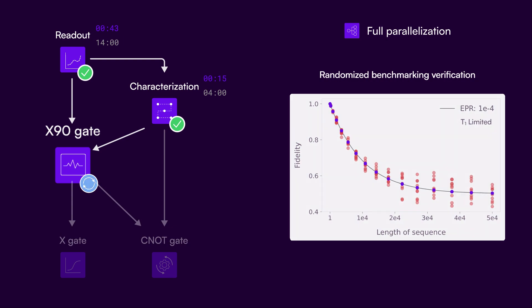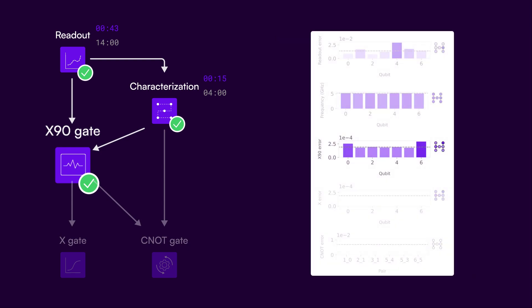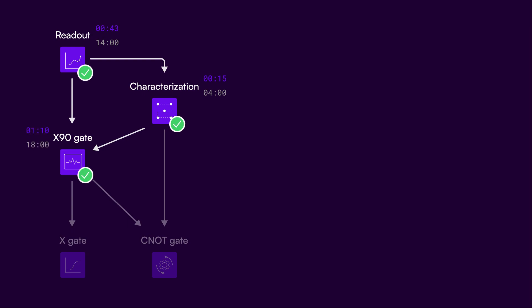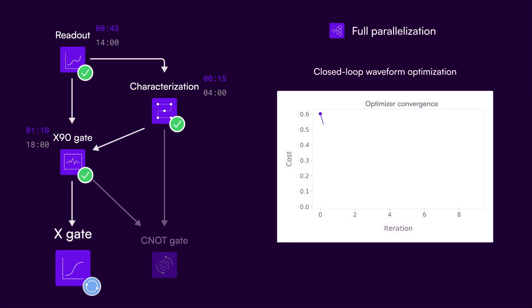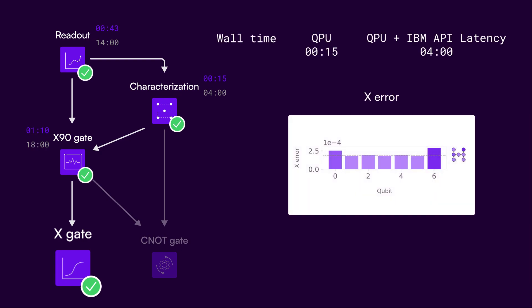Tuning up X90 gates to T1 limits for all devices takes less than 18 minutes in total, and uses hundreds of times fewer measurements than conventional approaches. You can optimize any other single qubit gates of interest, building on the X90 gate tune-up process. Here you see how to tune up X or Pi pulses entirely using a black-box closed-loop optimization routine. These are chosen because you can use them in dynamical decoupling sequences that help reduce circuit-level errors when executing algorithms. This step delivers X gates at the coherence limit for all devices in parallel in just 4 minutes.